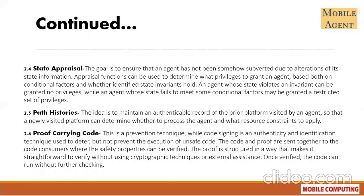Fourth is State Appraisal. The goal is to ensure that an agent has not been somehow subverted due to alteration of its state information. The appraisal function can be used to determine what privileges to grant an agent, based on confidential factors and whether identified state invariants hold. An agent whose state violates an invariant can be granted no privileges, while one that fails to meet conditional factors may be granted a restricted set of privileges.